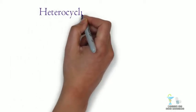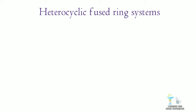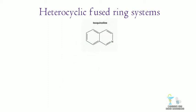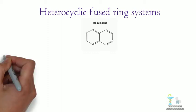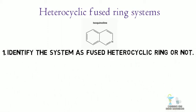In this video, we can see the rules for naming the heterocyclic fused ring systems. The rules are as follows: the first rule is to identify the system as fused heterocyclic ring or not.